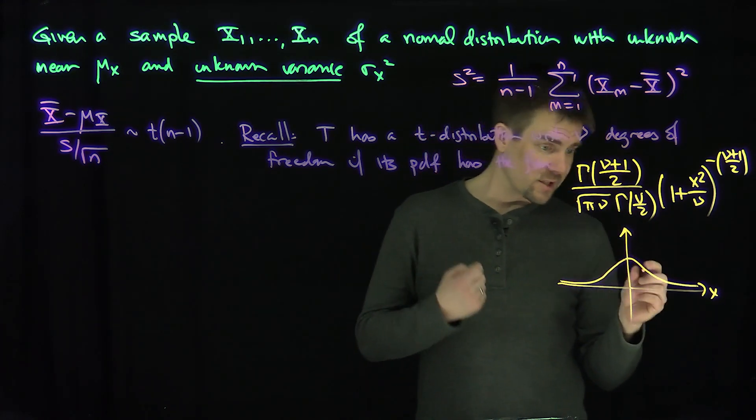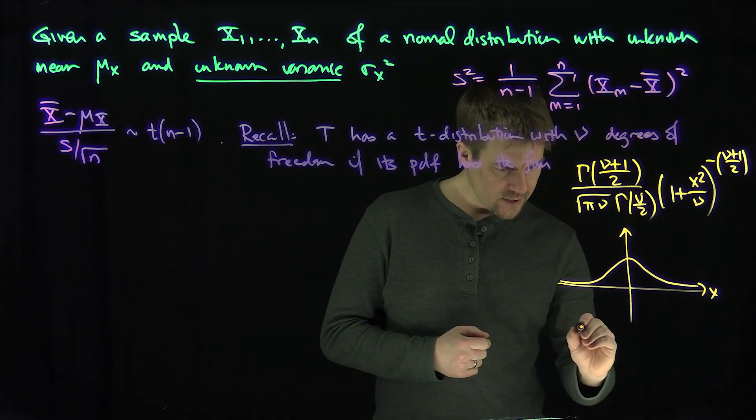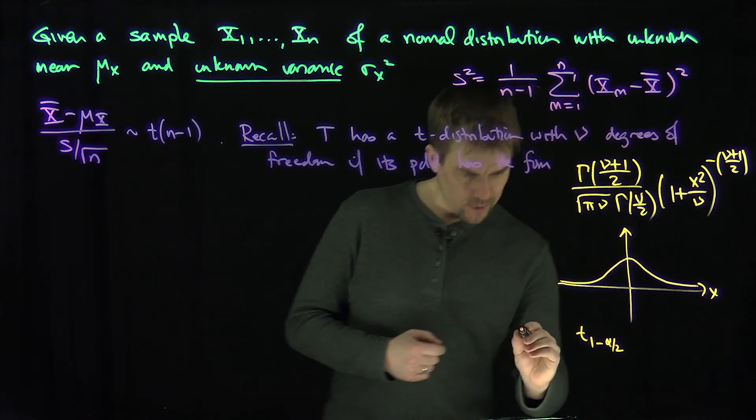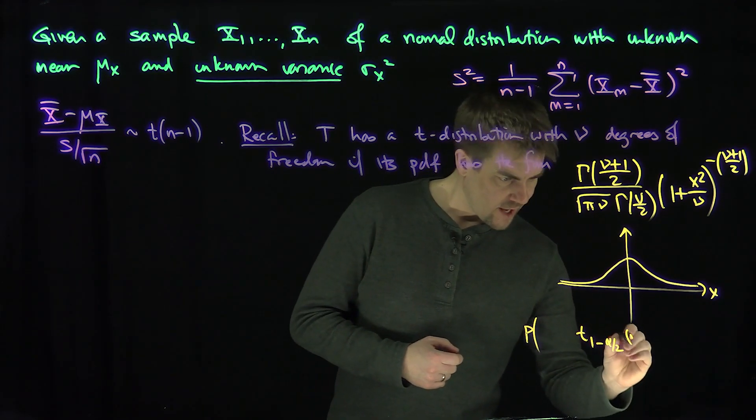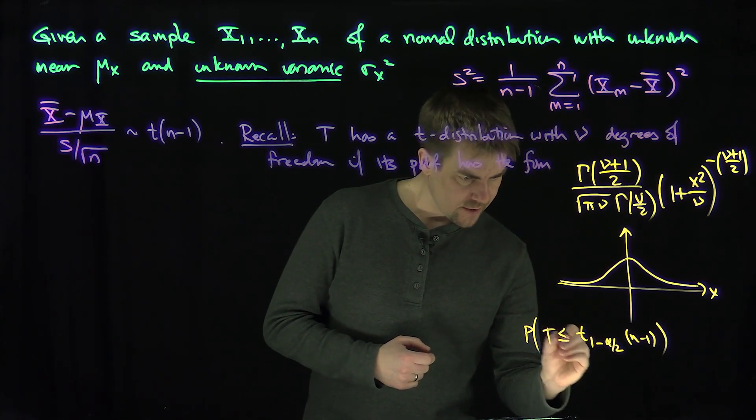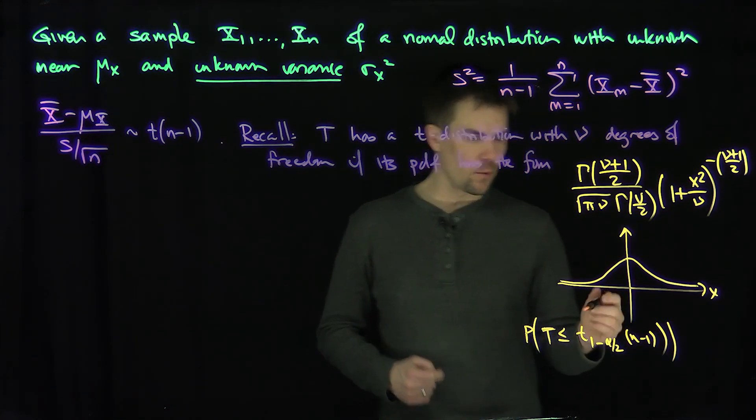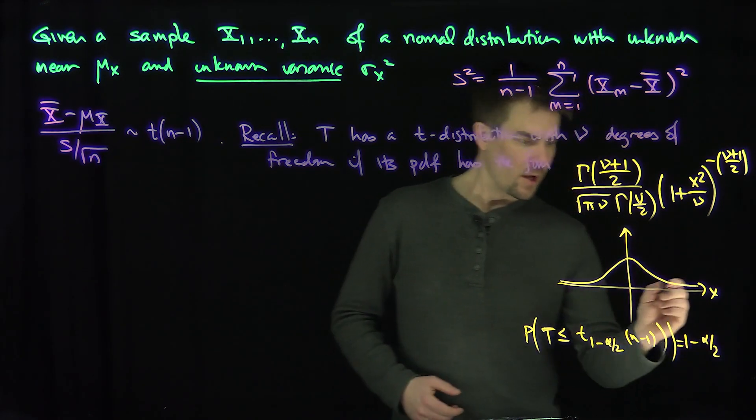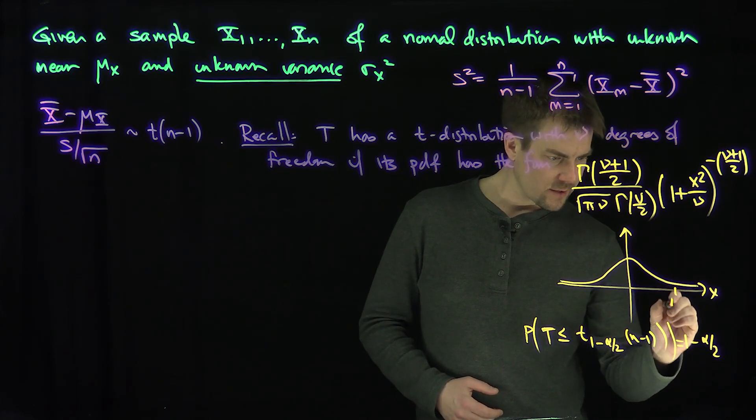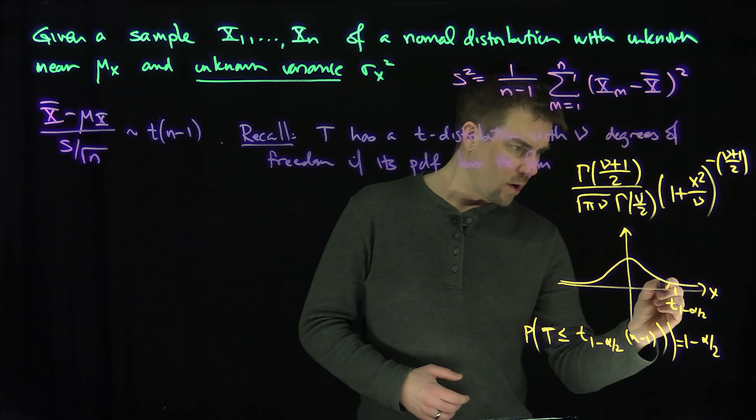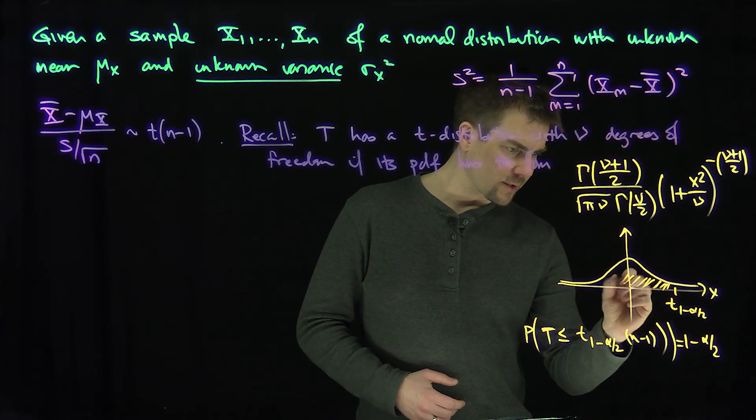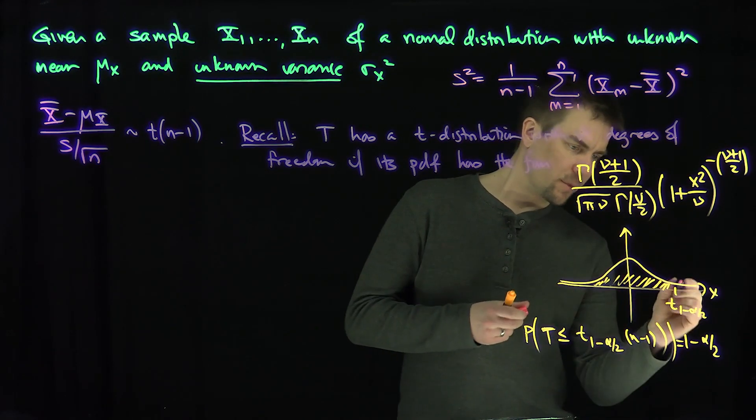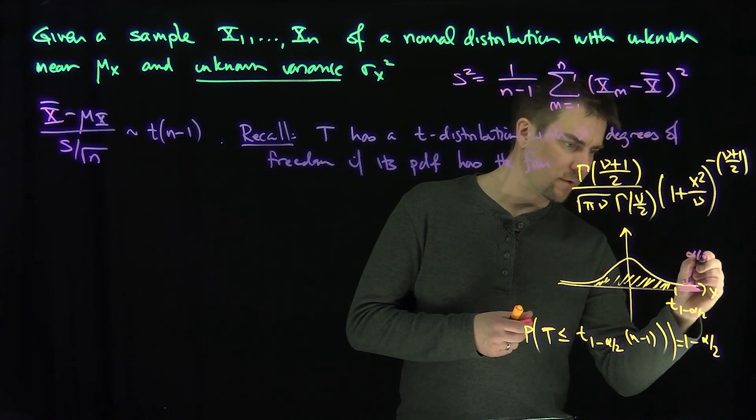So they look like this, and the important thing is that they're symmetric. So if I let t 1 minus alpha over 2, with n minus 1 degrees of freedom, that t is less than or equal to this, I'm going to say that that is a percentile, that's going to be the 1 minus alpha over 2 percentile. In other words, 1 minus alpha over 2 of the mass. This is t 1 minus alpha over 2, then all this over here is going to be 1 minus alpha over 2. So in other words, this little tiny area that's left over here is going to be just an alpha over 2.